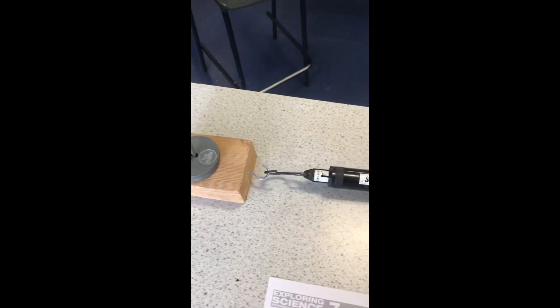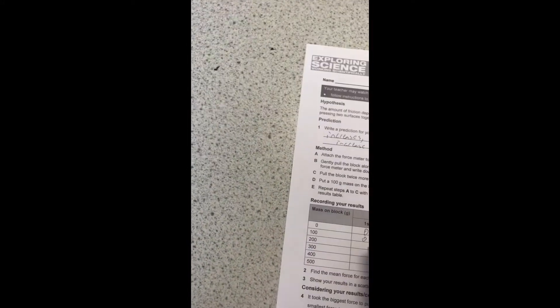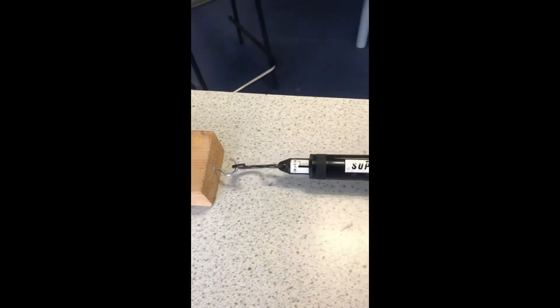I will now add 200 grams in total to my wooden block. We can see the force that I pull it was 0.6 Newtons. We'll measure the force once again. In this case it is 0.7 Newtons.